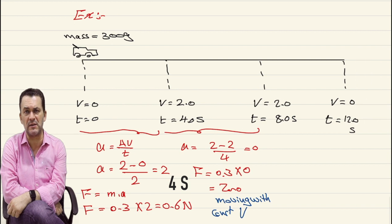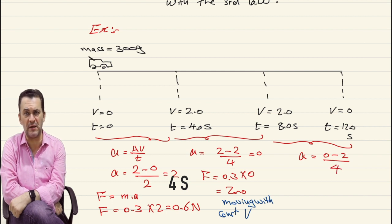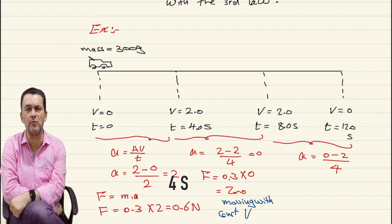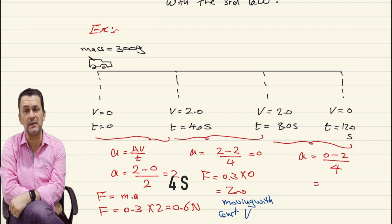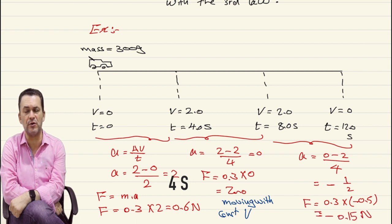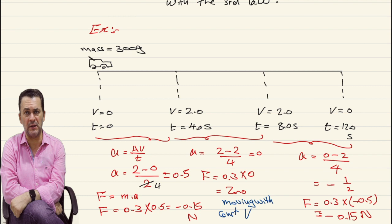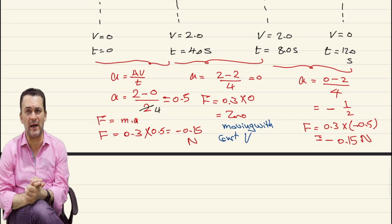In the third stage, perhaps the driver applied brakes or friction changed. The velocity decreased until it reached zero. We find the new acceleration: (final minus initial) divided by time gives negative 0.5 m/s². The negative means the force is acting in the opposite direction to the motion — the car is still moving forward but the friction force acts backward, causing negative acceleration. The force equals 0.3 kg times negative 0.5, giving negative 0.15 Newton. Observe that the first and last forces are equal in magnitude but opposite in direction.